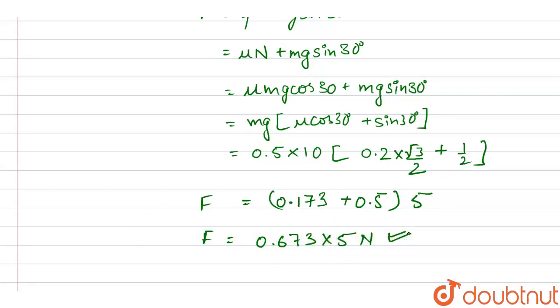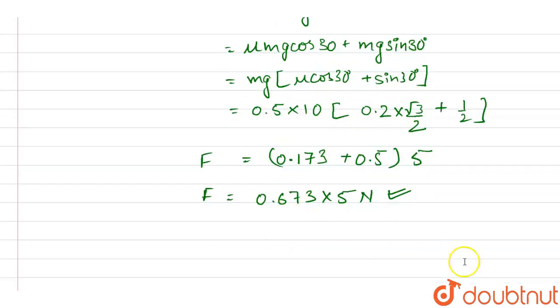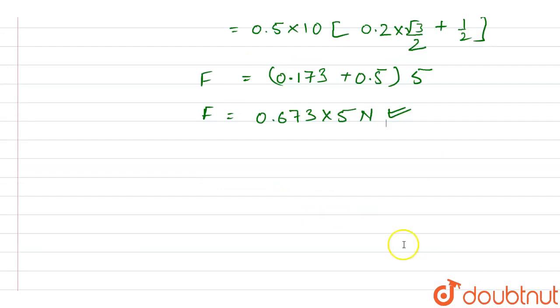So we have found this force. Now we need to find the power required so that the box moves at 5 meters per second. Power will be force times velocity.